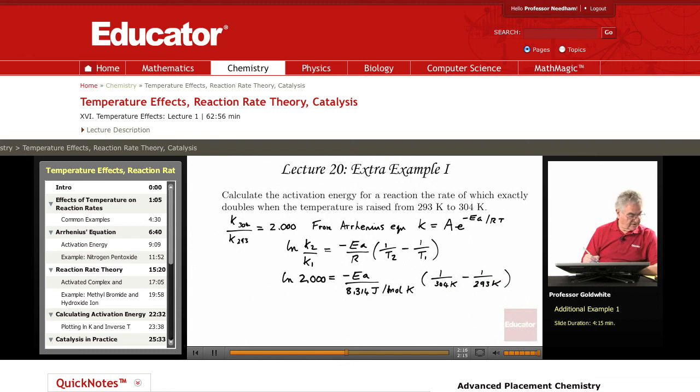One can simplify this somewhat. When you have the difference between two small numbers and you want to use your calculator, it's usually better to express it by simplifying the algebra: 293 minus 304 divided by 293 times 304.